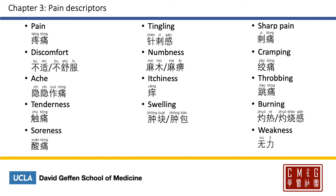Tingling will be 针刺感; 针 meaning a needle and 刺 meaning prickle. Numbness will be either 麻木 or 麻痺. Itchiness is 痒. Swelling is 肿块 or 肿包. Sharp pain will be 刺痛. Cramping is 绞痛. And throbbing pain will be 跳痛. Burning is 灼热 or 灼烧感. Weakness is 无力.